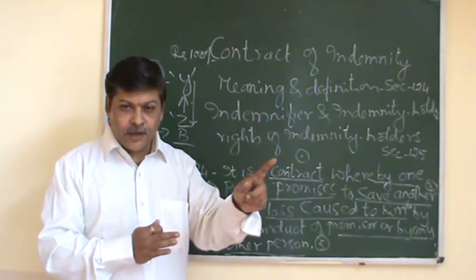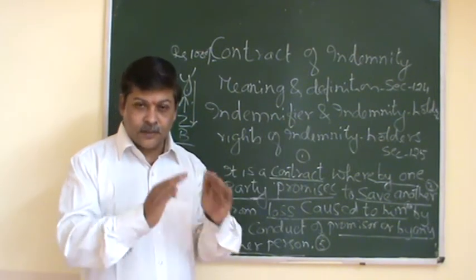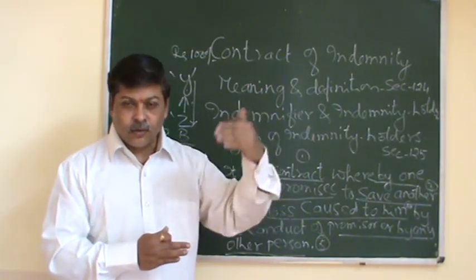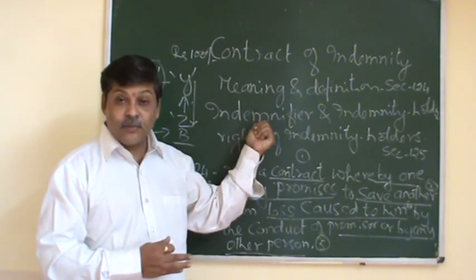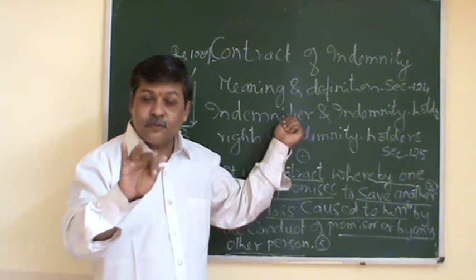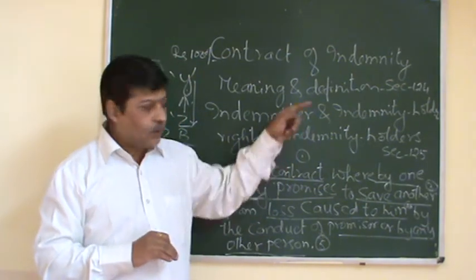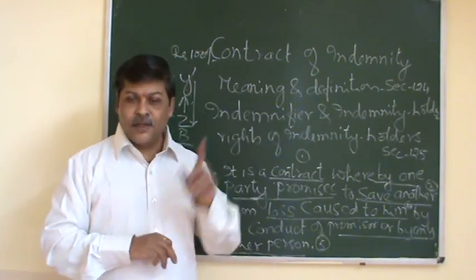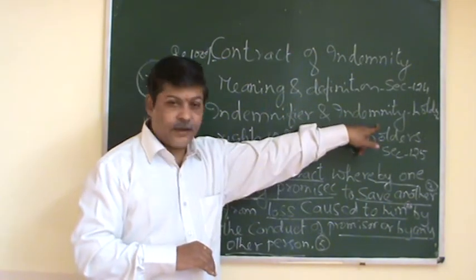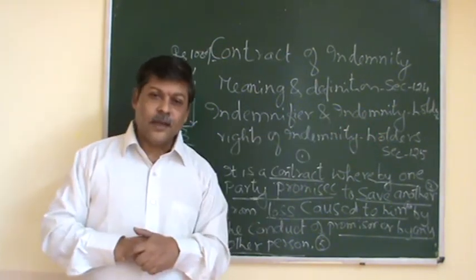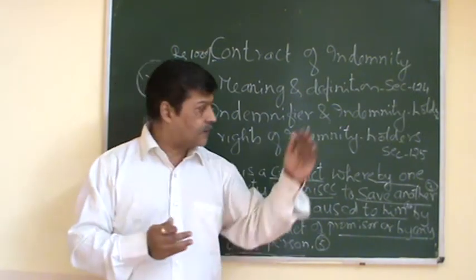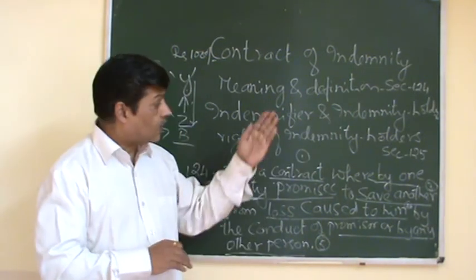The person who promises to make up the loss is called the indemnifier. The promisor is the indemnifier — specific words are used: indemnifier. And the person to whom the promise is made — whose loss will be made up — is called the indemnity holder, also referred to as the indemnified. These are the two parties in a contract of indemnity: indemnifier and indemnity holder.